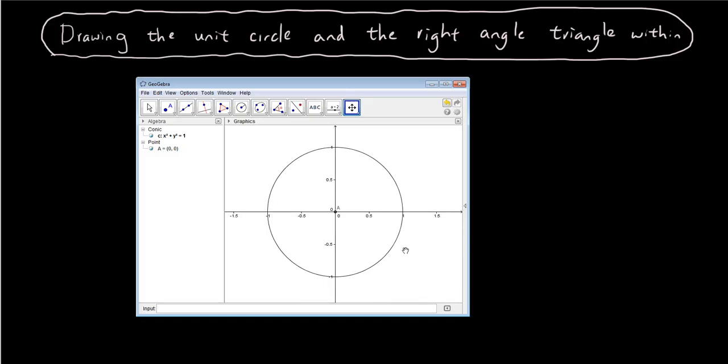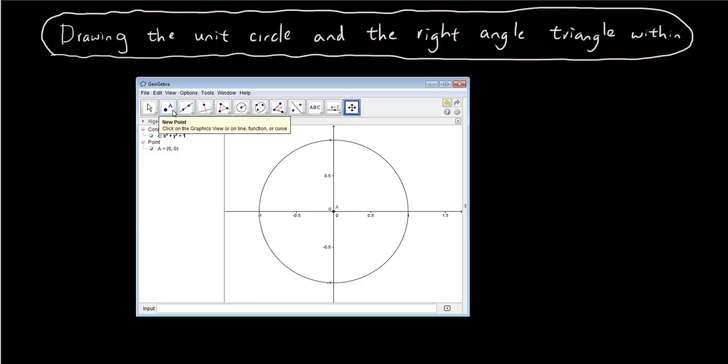Okay, the next thing that I want to do is create a new point somewhere on the circle, preferably on the top right hand quadrant, within this quarter quadrant.